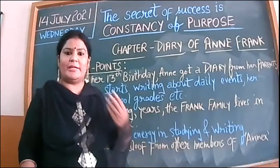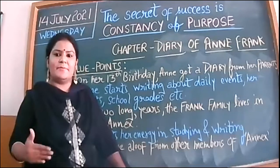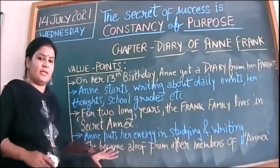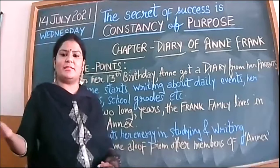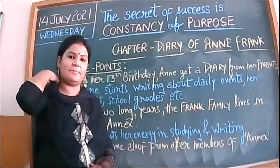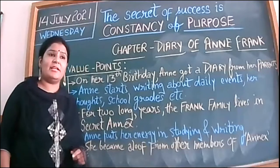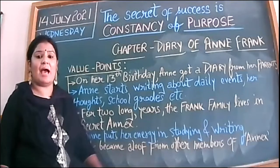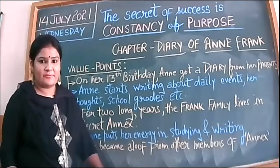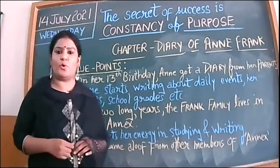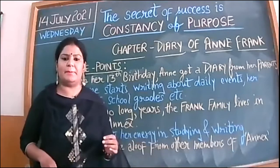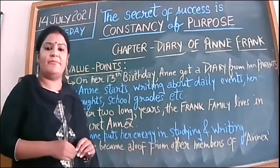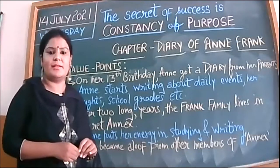Otto Frank, father of Anne Frank, decided to go into hiding. He had one adjoining building in his office, which we call an annex — a secret annex. Annex is another part of the main building. They decided to go into hiding because they wanted to save their lives. World War II was going on and they had to go under hiding not for days, not for weeks, but for two long years — just like people bound in their homes due to COVID — in Otto Frank's office.